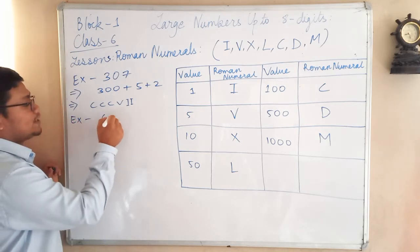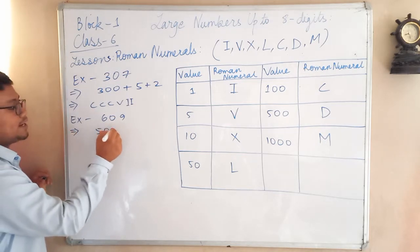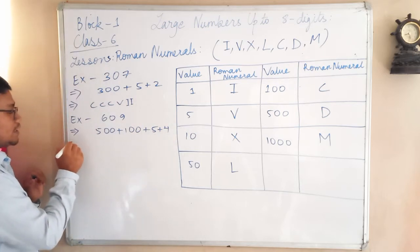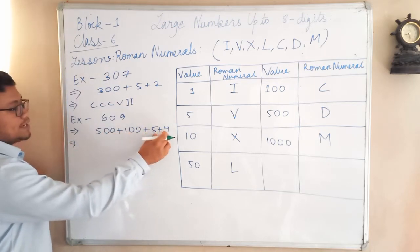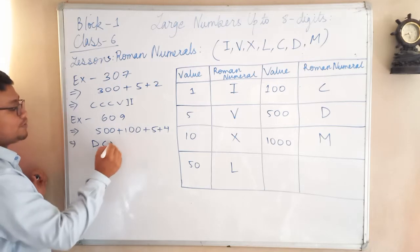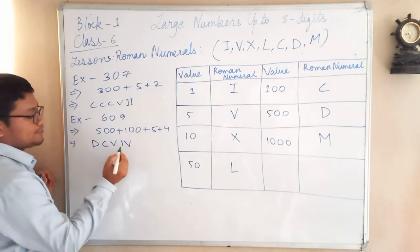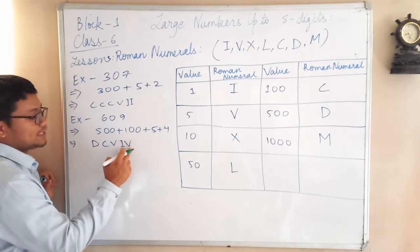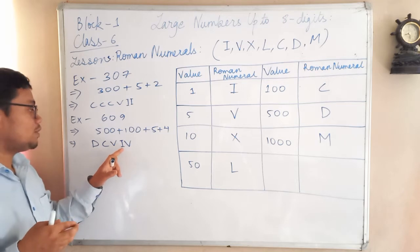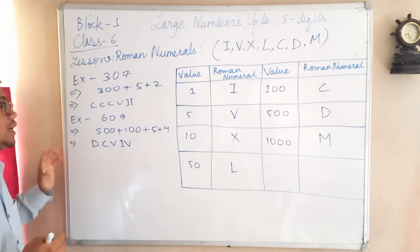Another example: if it is 609. Six hundred is 500 plus 100, then plus 5 plus 4. Five hundred is D, one hundred is C, five is V, and four is always represented as IV — because four is just before five, so when we represent four which comes before five, we write it as IV. So 609 is written as DCMIX — wait, it is DCVIV.